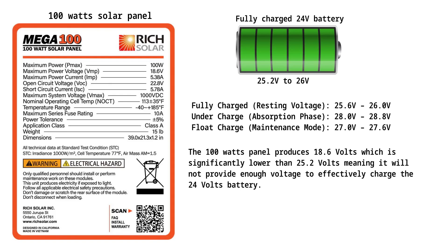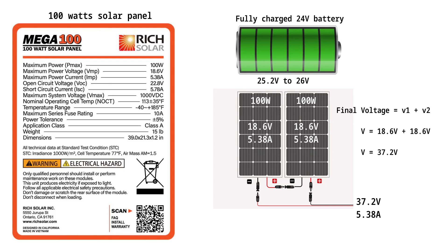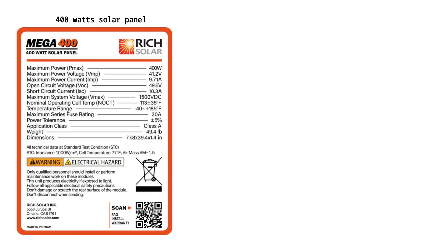To make it suitable for use with a 24-volt system, two 100-watt panels will be connected in series. With this, the voltage adds up while the current remains the same. The final voltage equals V1 plus V2, which is 18.6 volts plus 18.6 volts, equal to 37.2 volts. With this, the solar panels will be able to effectively charge the 24-volt solar system.